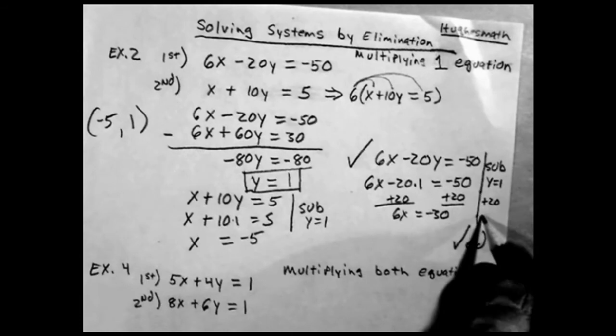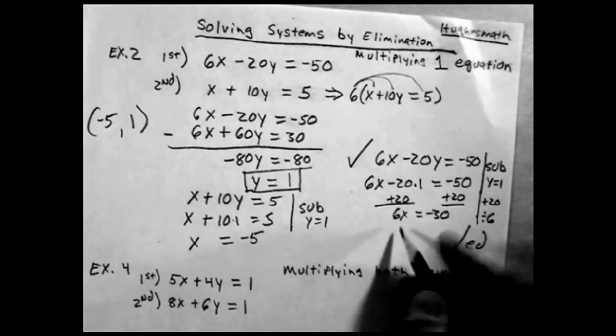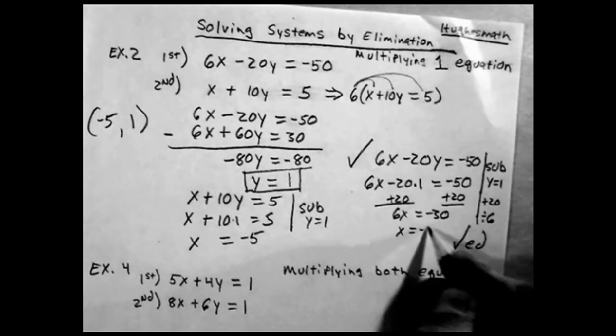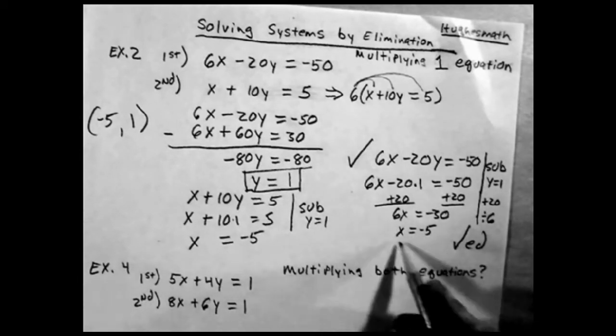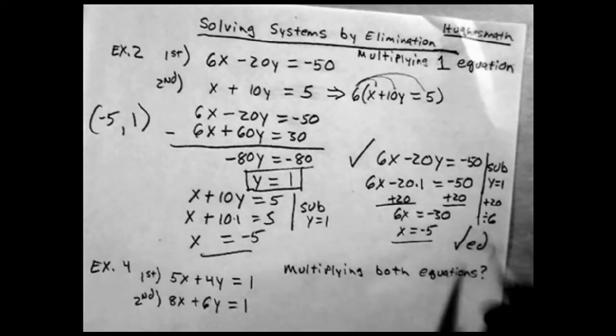6x equals minus 30. Divide both sides by 6, and you get x equals negative 5.